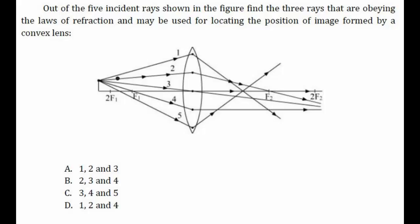Now let's check the second ray. The second incident ray is parallel to the principal axis, and as we know, a ray parallel to the principal axis passes through the second focus of the lens. We can see that the second ray correctly passes through the second focus.